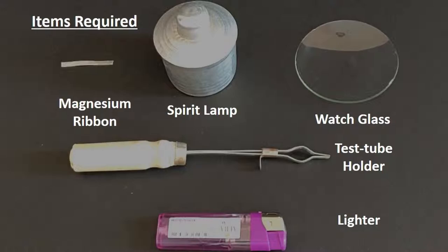We also need a watch glass. A cutter or sandpaper is additionally required to scrape the tip of the magnesium ribbon or strip. This is an optional step.